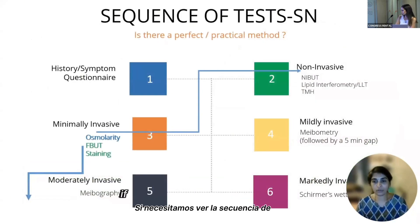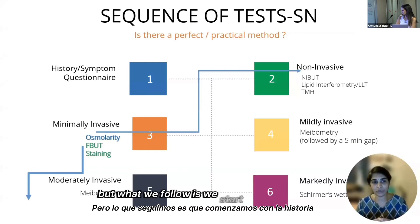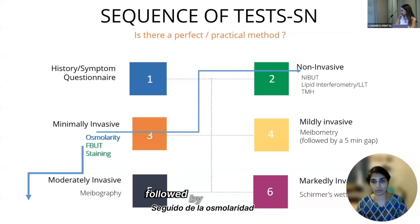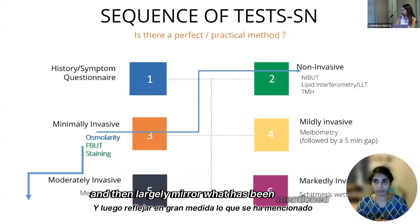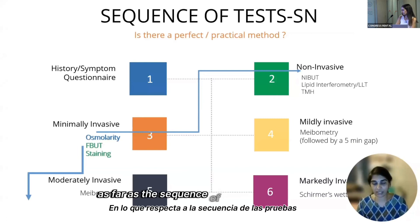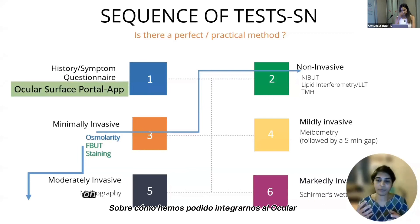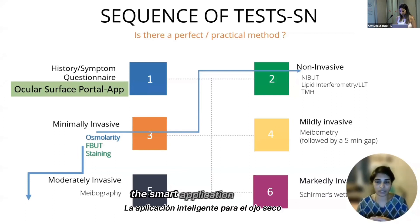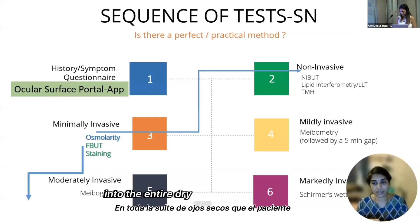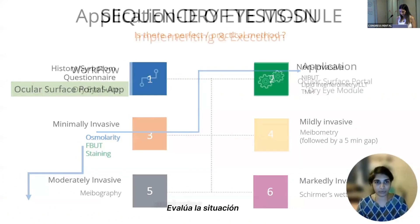If we need to look at the sequence of testing, there is no perfect method. What we follow is starting with the history and symptom questionnaire, followed by osmolarity, and then largely mirroring what has been mentioned by the TFOS as far as the sequence of testing is concerned. This talk will subsequently focus significantly on how we have been able to integrate the Ocular Surface Portal — the smart application for dry eye — into the entire dry eye suite that the patient goes through during a dry eye evaluation.